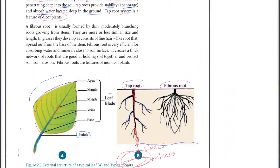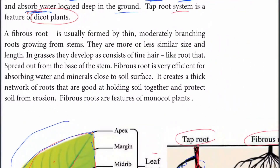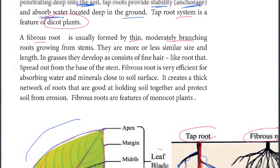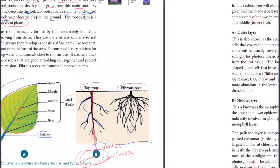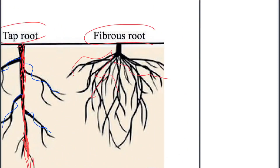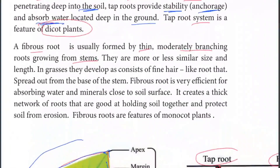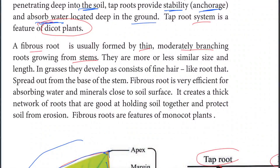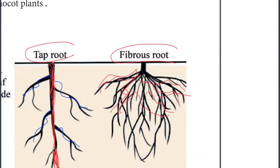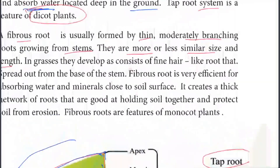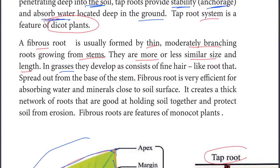The fibrous root system is usually formed by thin, moderately branching roots growing from stems. These roots are more or less similar in size.